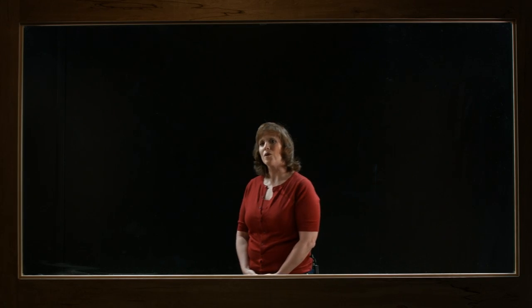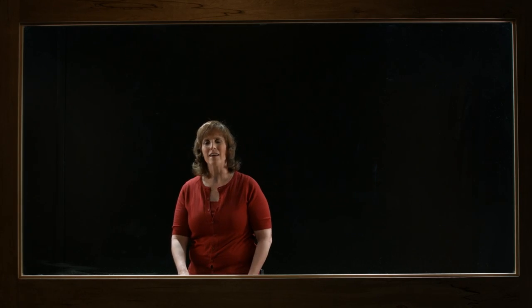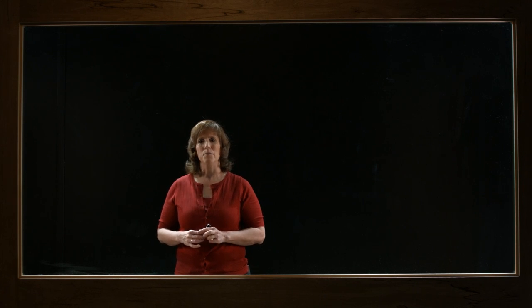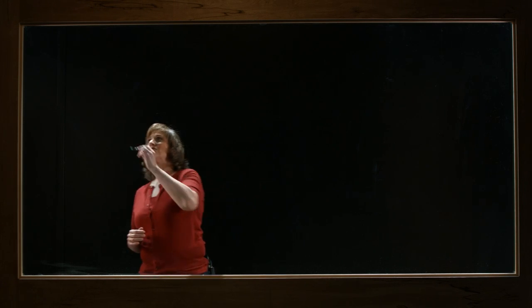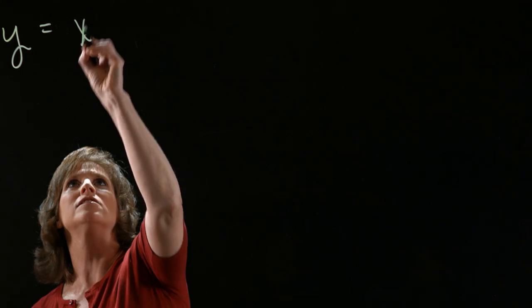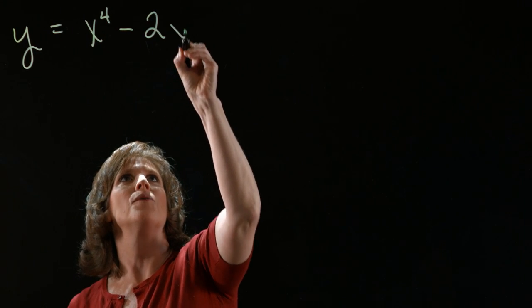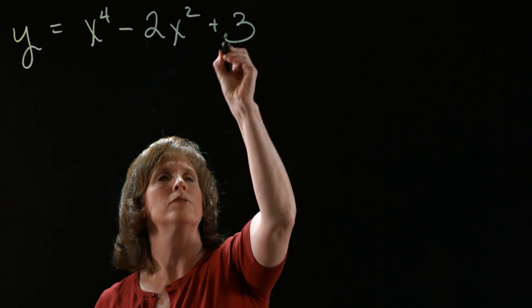Hi, I'm Cheryl Leach, and the problem we're going to work on right now, we're going to be talking about finding the points on a graph where the tangent is horizontal. Let's start out with the function y equals x to the fourth minus 2x squared plus 3.